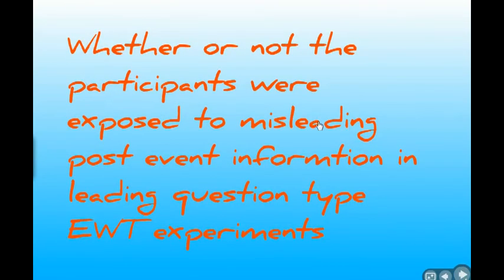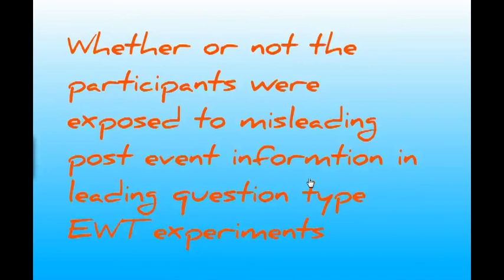There's also whether participants were exposed to misleading post-event information in eyewitness testimony experiments. In Loftus and Palmer, participants are shown video footage of cars and asked 'did the car slow down when passing the white barn?' — even though there was no barn in the background. The extent to which people invest in that kind of suggestion is something we can manipulate.